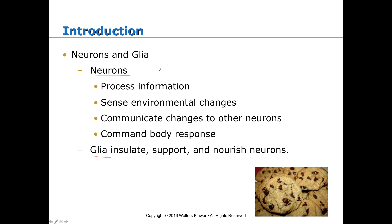Neurons are the major cells within the nervous system — they process information, bring information from the environment into the brain, sense environmental changes, communicate changes to other neurons, and command body responses. Throughout the rest of the course, we'll talk about how neurons communicate, how they tie in with drugs, different disorders, and the sensory systems. Glia are supporting cells that insulate, support, and nourish neurons. Think of it like a chocolate chip cookie: the chocolate chips are the neurons and the dough surrounding them is the glia, cushioning and providing nutrition and support.